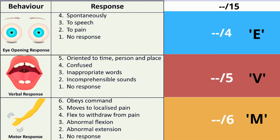The last component, motor response, is graded out of six. A score of six is when the patient follows commands. Five is movement due to localized pain. Four is withdrawal from pain. Three is assigned to abnormal flexion, and two is abnormal extension. If there is no motor response, it is a score of one. It is documented with the letter M.